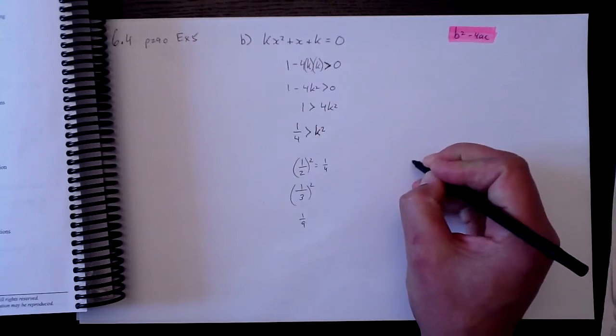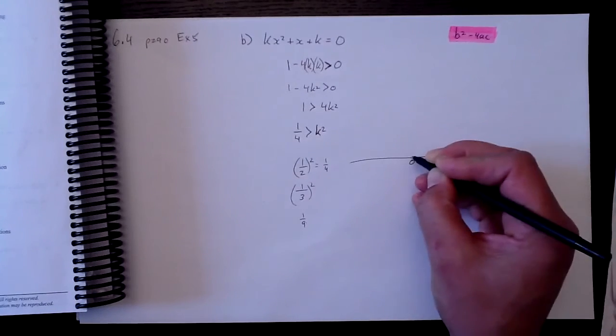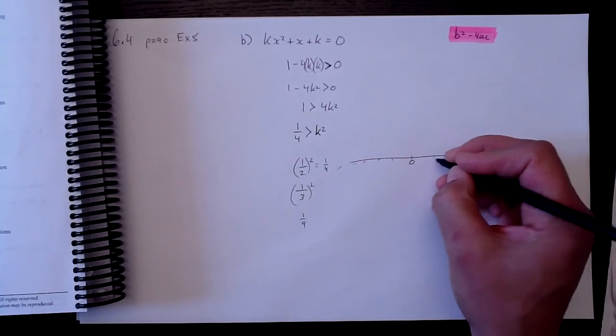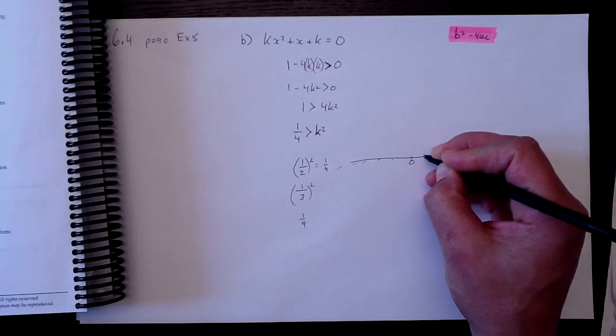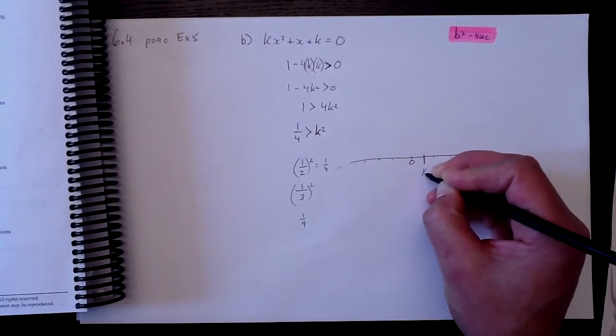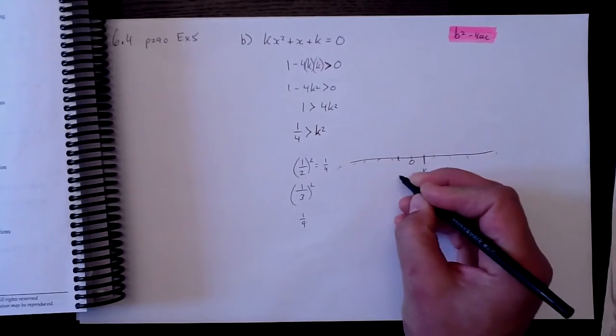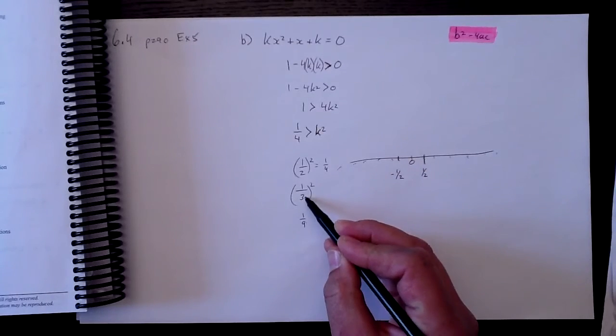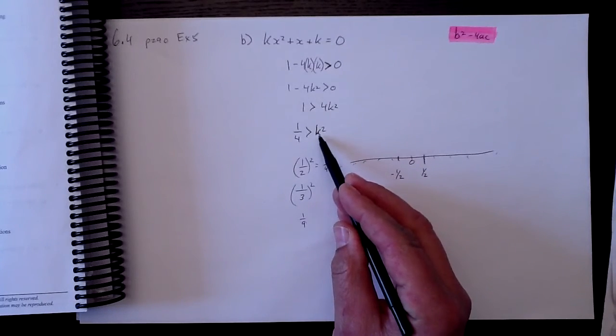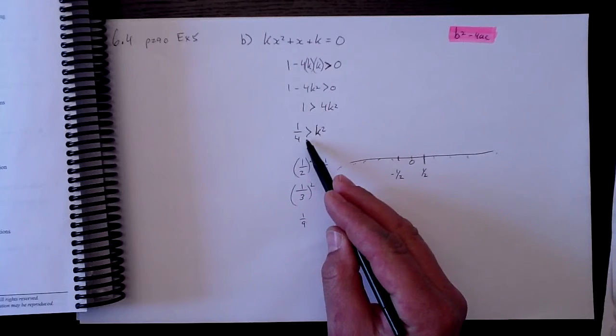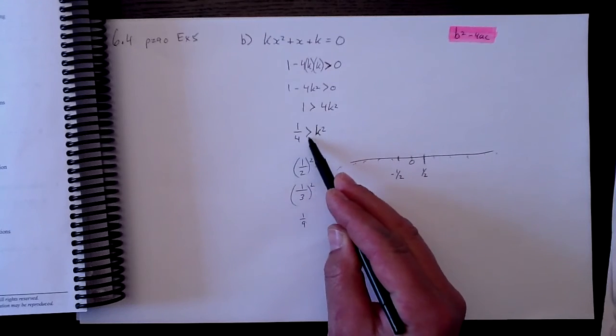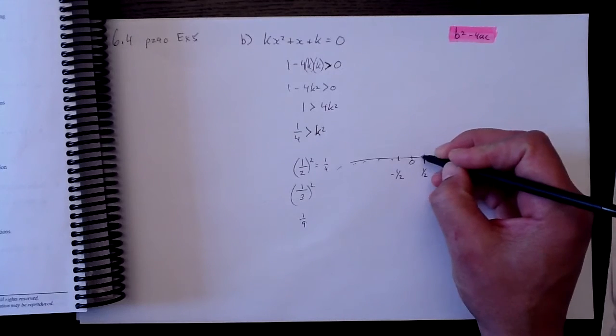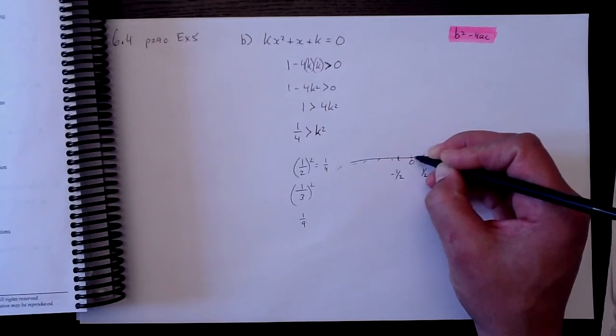So if I take my number line, and I say that this is plus 1 half, and this is minus 1 half, 1 third satisfies this equation. So 1 third satisfies that a quarter is larger than k squared, because a third squared is down here. So this value is okay.